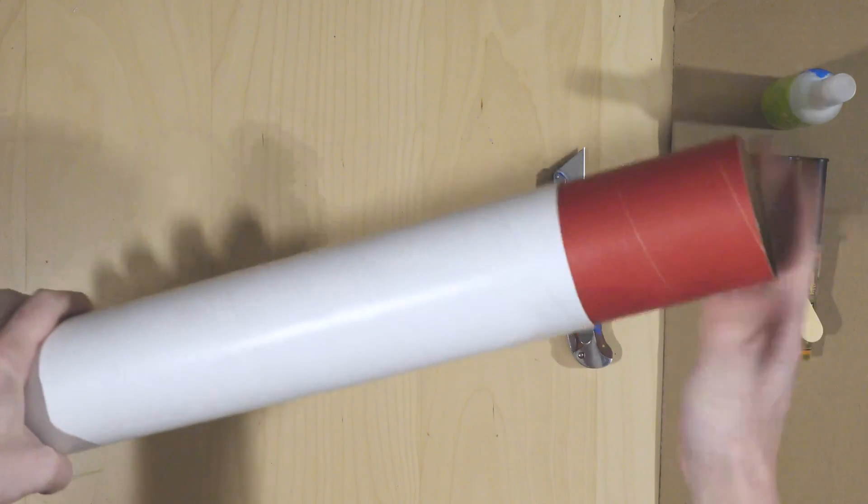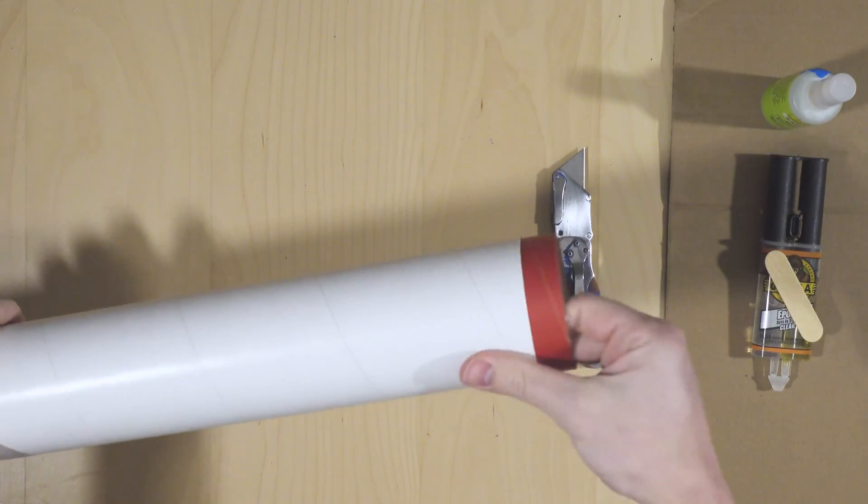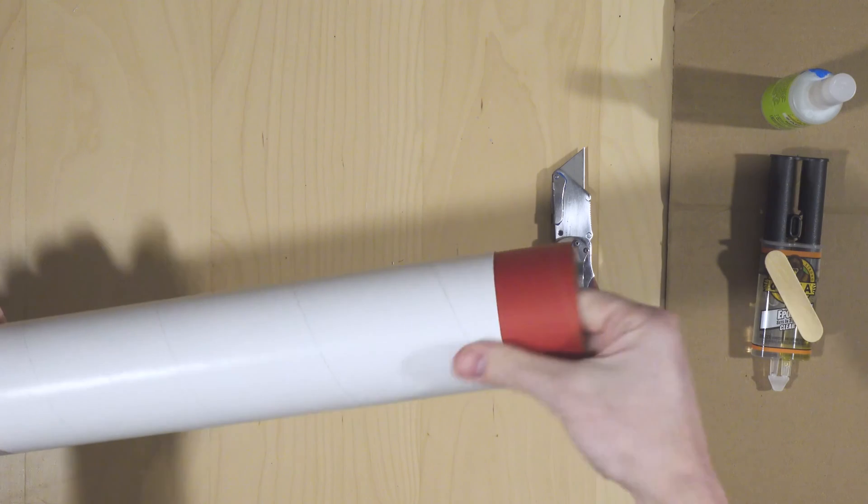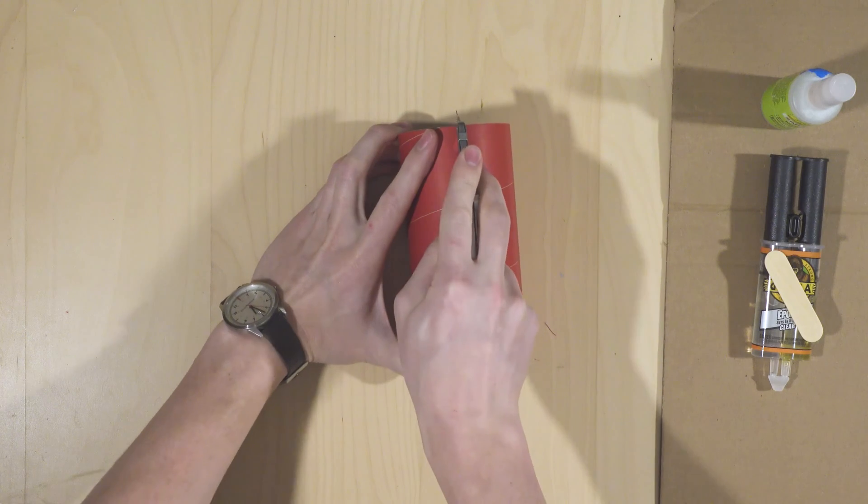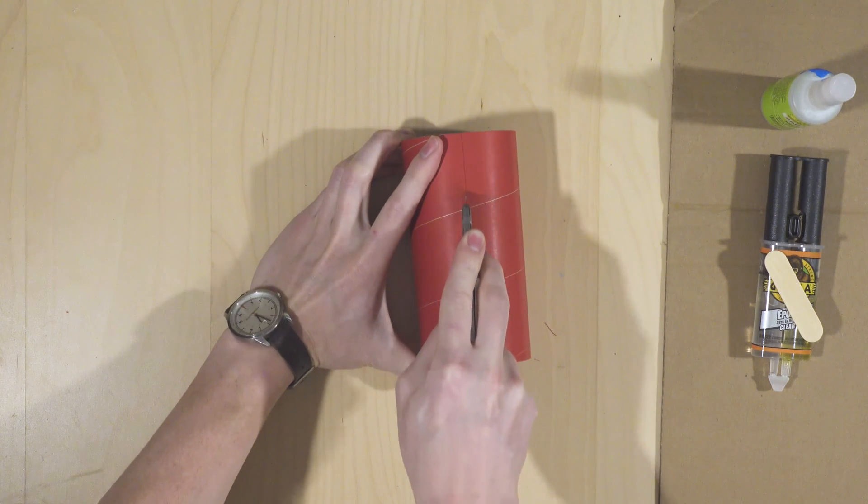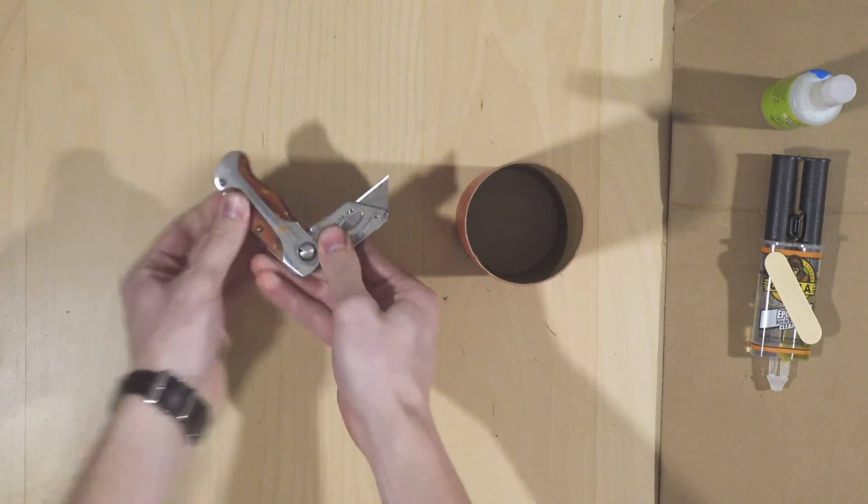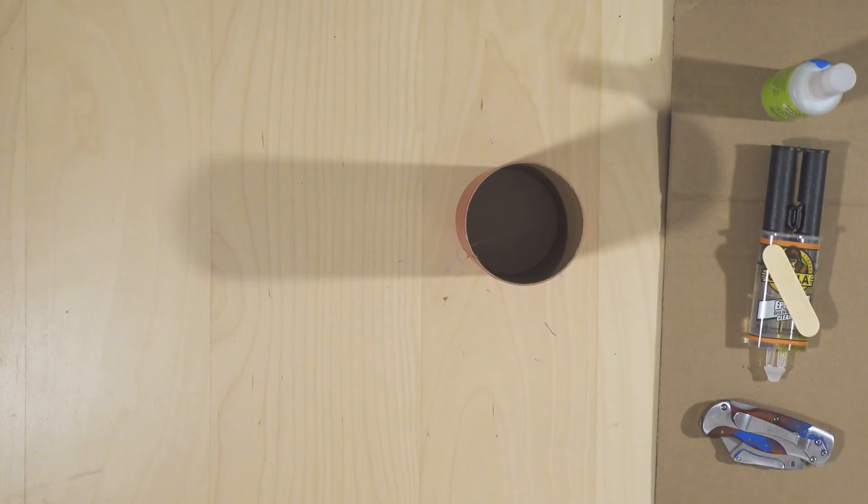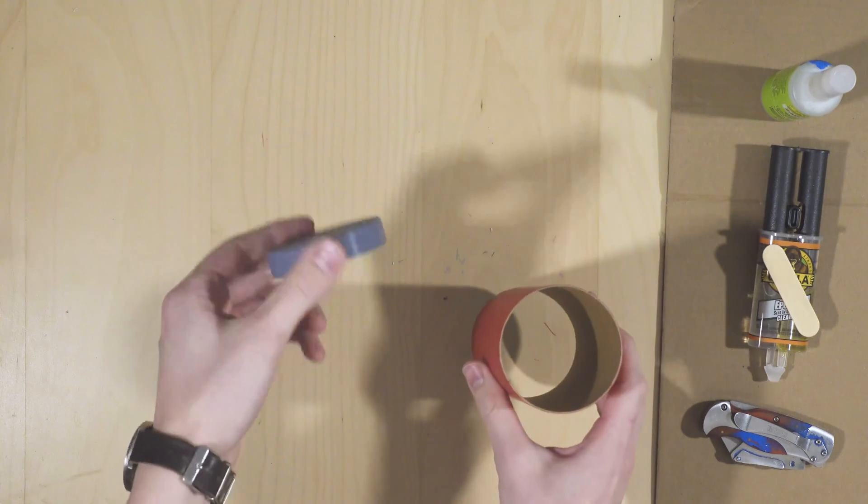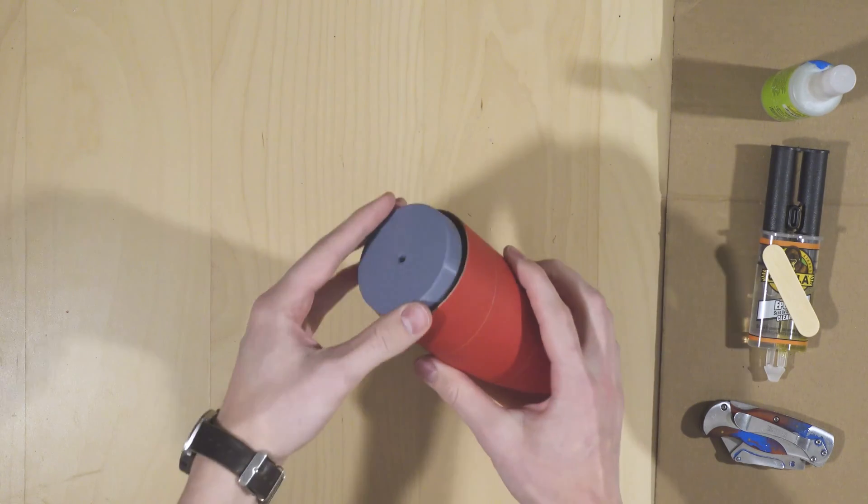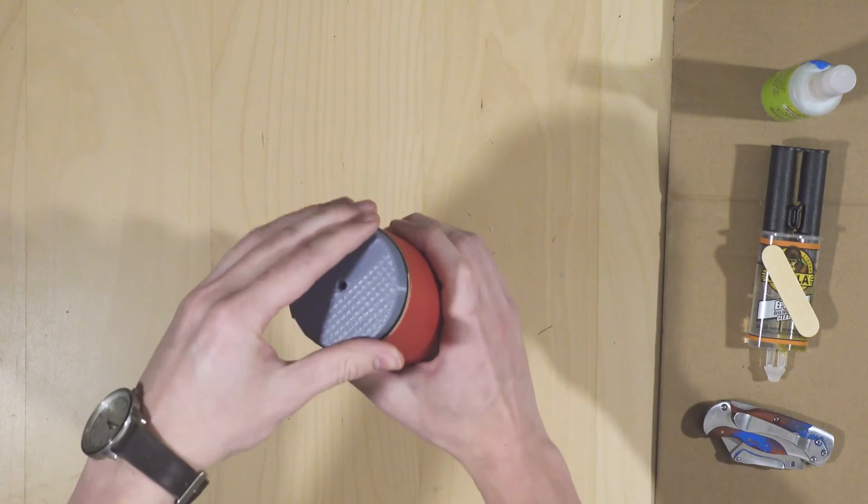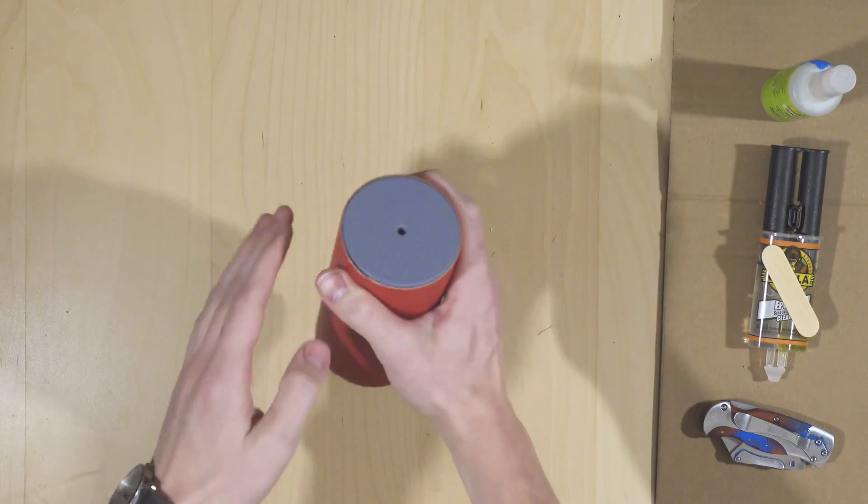This body tube coupler experiences a bit of friction against the airframe. Once we've fired a few ejection charges, this will only get worse. We'll make this body tube coupler a little bit smaller. By cutting down the length of it and folding it slightly over itself, we'll end up decreasing its diameter by just enough so that it slides very freely through the airframe. This part will become the head of the piston.